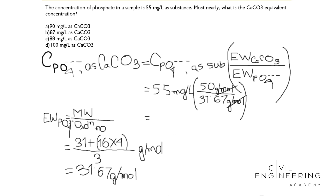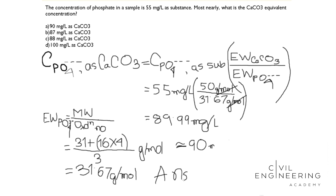After the full calculation, I got 89.99 milligrams per liter, which means 90 milligrams per liter as calcium carbonate equivalent. Our answer is E: 90 milligrams per liter. Thank you for watching the video.